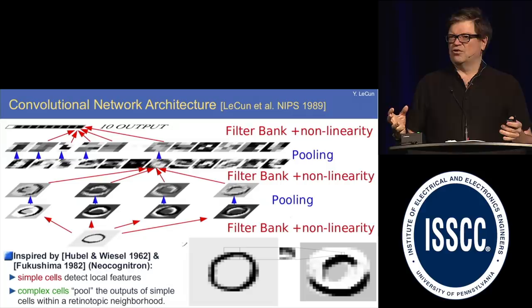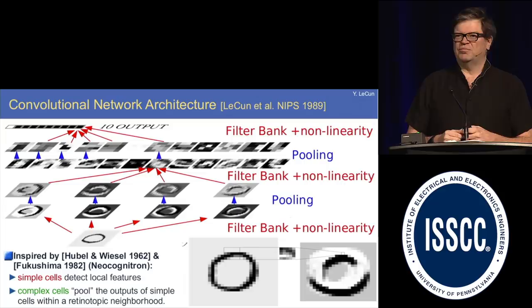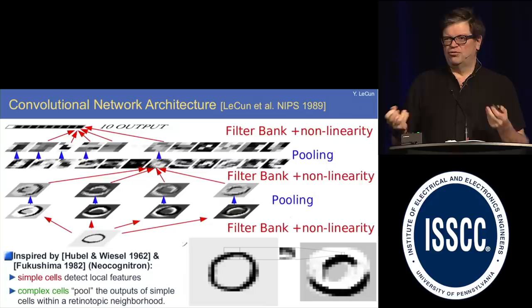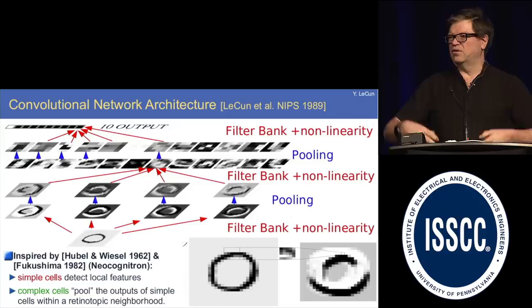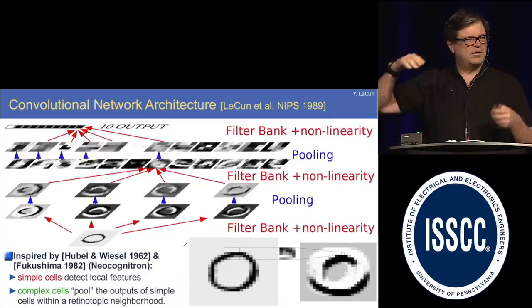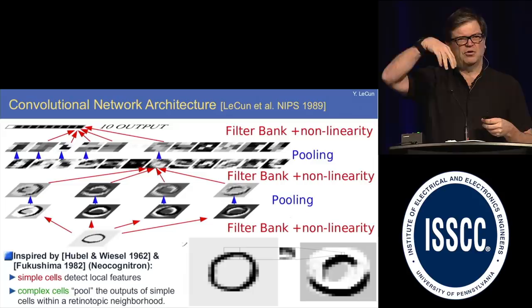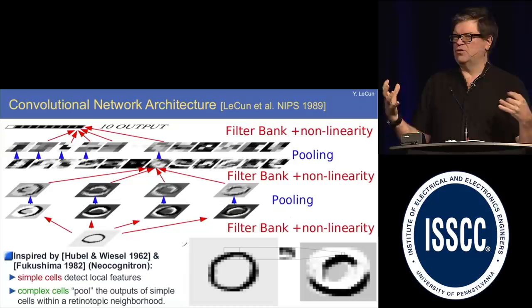A convolutional net is a particular architecture for connecting neurons such that you don't have to use a full matrix to multiply the input vector. Imagine you have an image represented as an array of pixels, and you run a discrete convolution operation on it where the filter coefficients are learned as part of the backpropagation process — you don't design the filters, you let gradient descent figure out the right ones. There are several layers: banks of filters, followed by non-linearity, followed by a pooling operation — basically a max or average of the filter responses in a region — to build shift invariance. This is very much inspired by classic neuroscience work from the 60s.